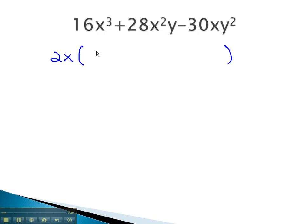Factoring 2x out will leave us with 8x squared, plus 14xy, minus 15y squared. We can now factor this trinomial using the AC method.